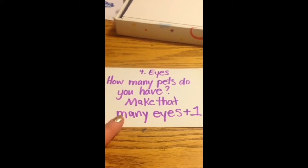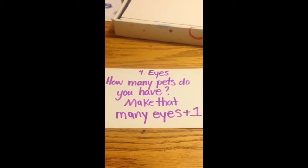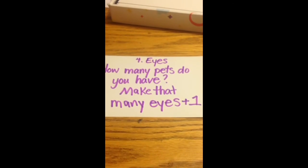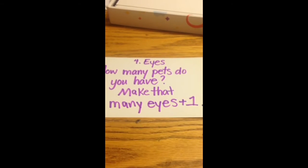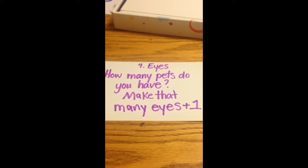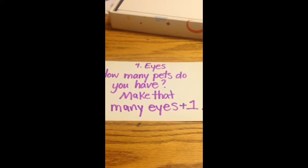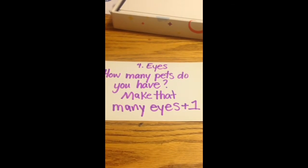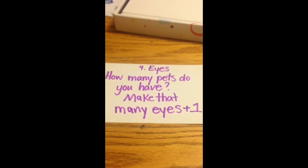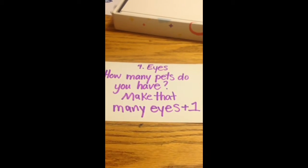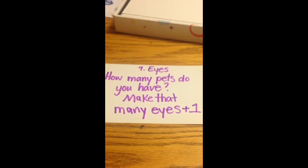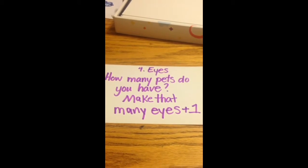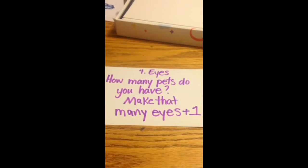Number four — eyes: how many pets do you have? Make that many eyes plus one. So if you have zero pets, zero plus one equals one, and your alien is going to have one eyeball. There are four pets in my house — two dogs, one hamster, and one leopard gecko — so four plus one means my alien has five eyeballs.